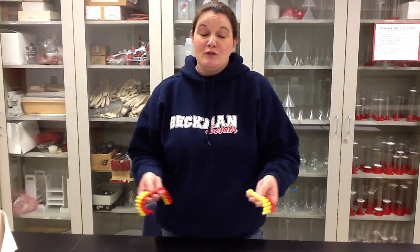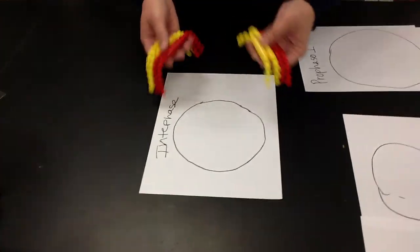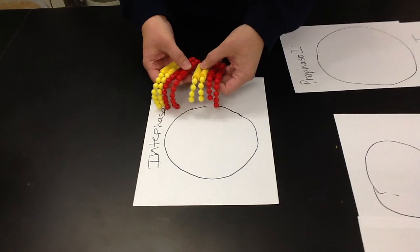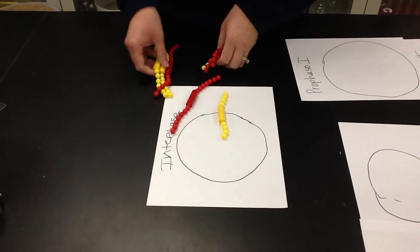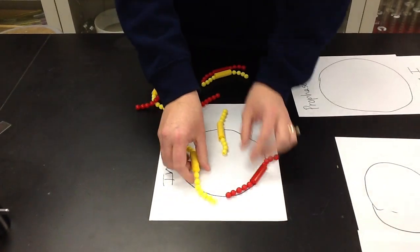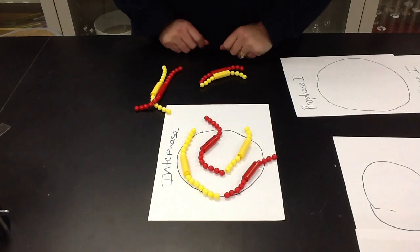We're going to start with the interphase cell. You do not have to do interphase in the lab, but I do want you to see where the chromosome numbers are coming from. We may get interrupted by Ms. Oberlin in the back, but that's okay. So interphase, remember, it's going to start our original cell in G1 is going to have four chromosomes.